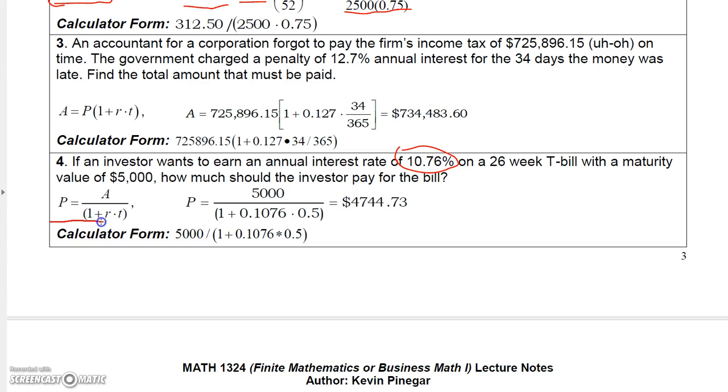I'm going to use this formula because we're looking for principal. So the principal should equal the amount, which is $5,000 divided by 1 plus RT. R is 0.1076. T is half a year, 0.5 years, because 26 weeks is 0.5 years or one half a year. And so when you plug this into the calculator, you get $4,744.73.